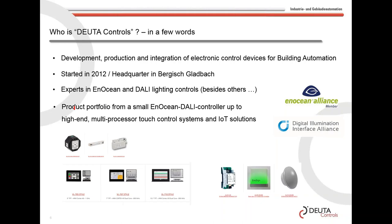Data Controls does development, production, and integration of electronics and electronic control devices for building automation. We started in 2012. We are experts in EnOcean and DALI lighting controls. From the very beginning we supported EnOcean, and on the interface side to the ballasts and LED drivers we are mainly focused on DALI as the worldwide available interface. Our product portfolio starts from small EnOcean DALI controllers, continues with touch panels, control devices, and peripherals, up to complete building automation solutions.